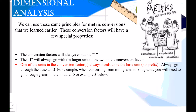We can also use dimensional analysis to solve metric conversions. These conversion factors have special properties. The conversion factor will always contain a one, and the one will always go with the larger of the two units. One of the units in the conversion factor always needs to be the base unit — always go through the base unit. For example, when converting from milligrams to kilograms, you will need to go through grams in the middle.